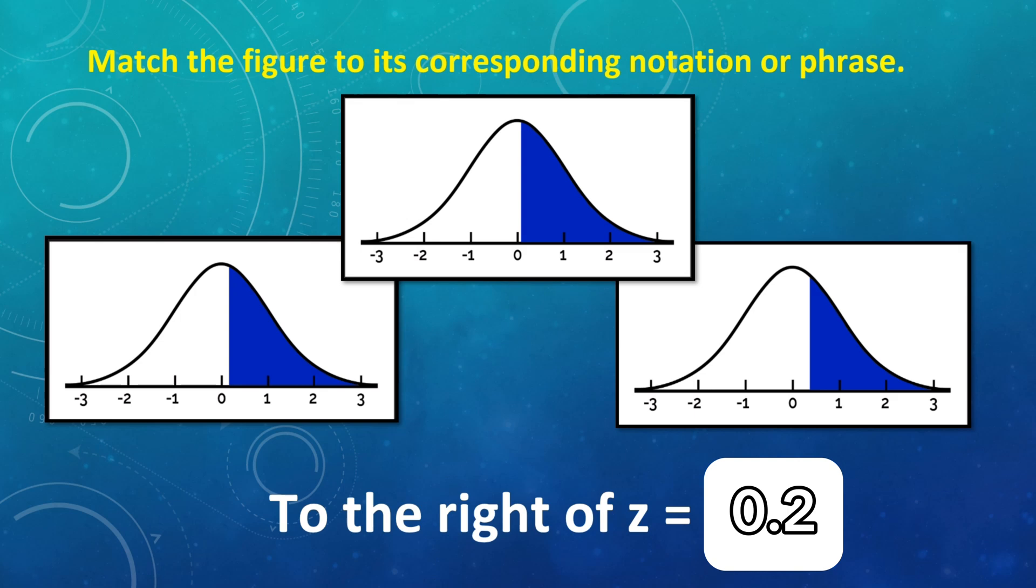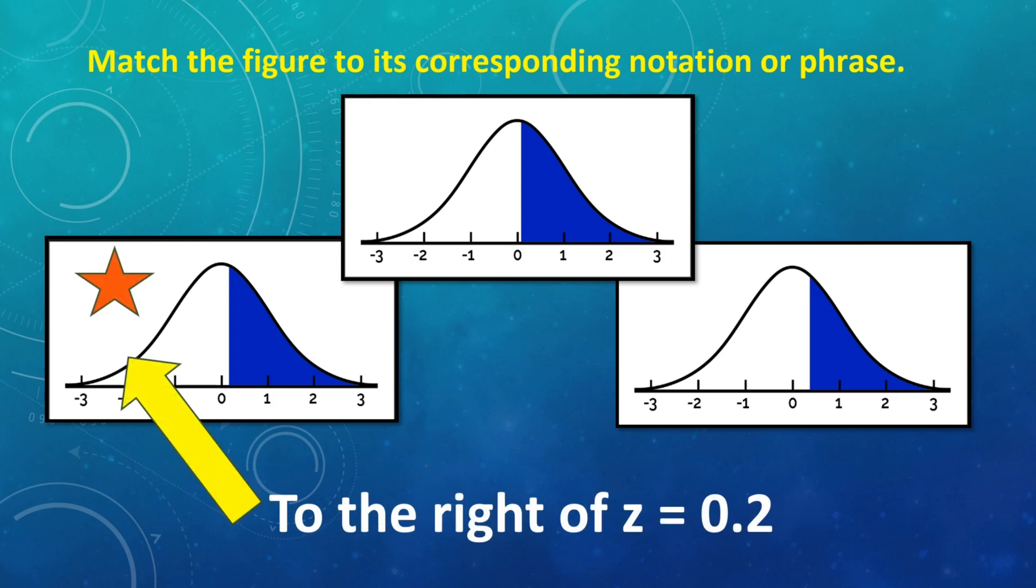Next is to the right of z equals 0.2. Pataas. So, the correct one is on the left side.